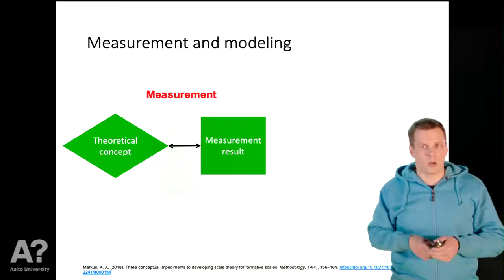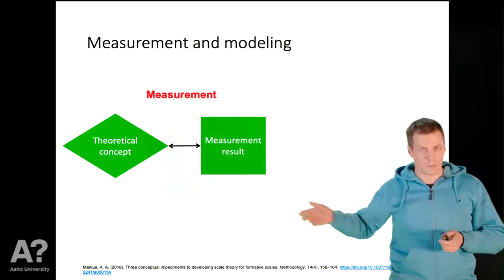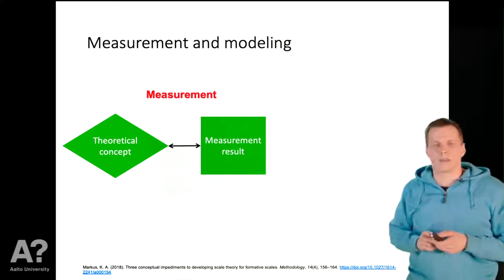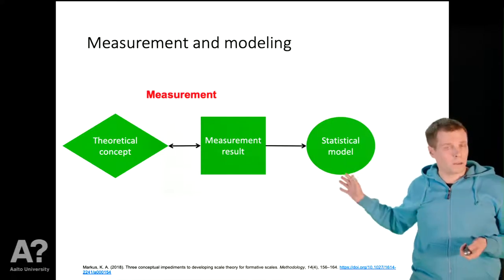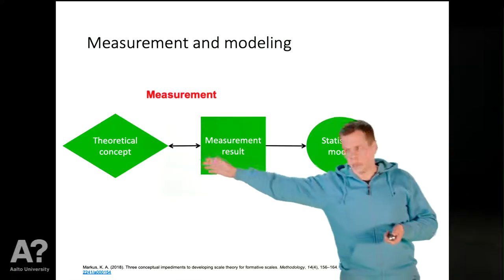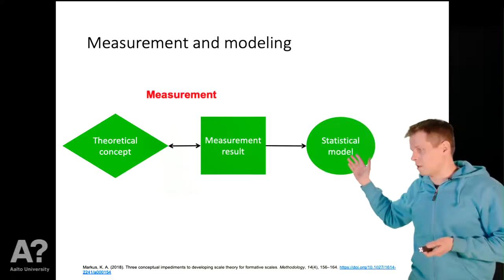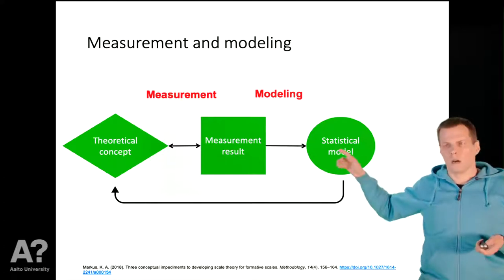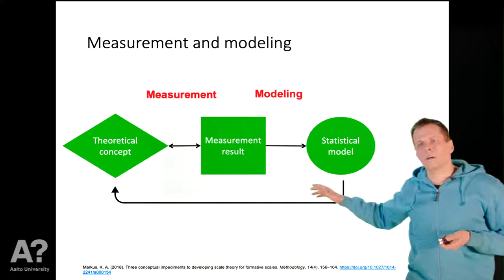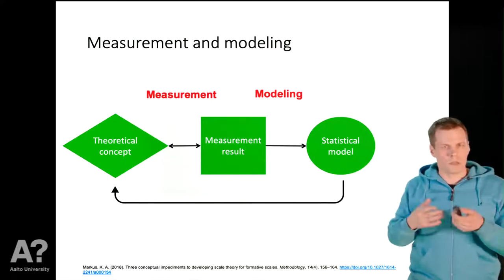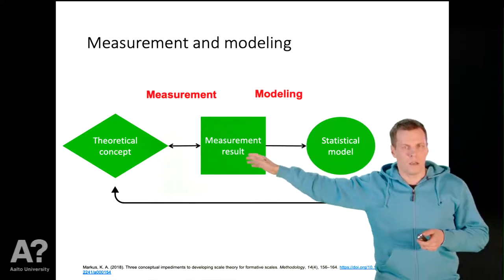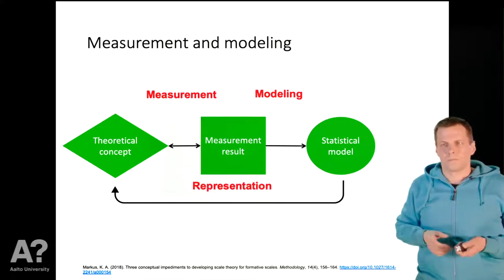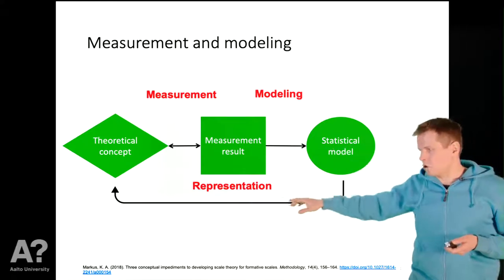We model a latent variable to represent the theoretical concept, with arrows going toward the measurement results. There are three things to consider: the theoretical concept, the measurement results, and how we build a statistical model from those results. The statistical model should be a representation of the theoretical concept. If we represent a measurement relationship — the relationship between the measurement result and the thing being measured — then we call the resulting model a measurement model.